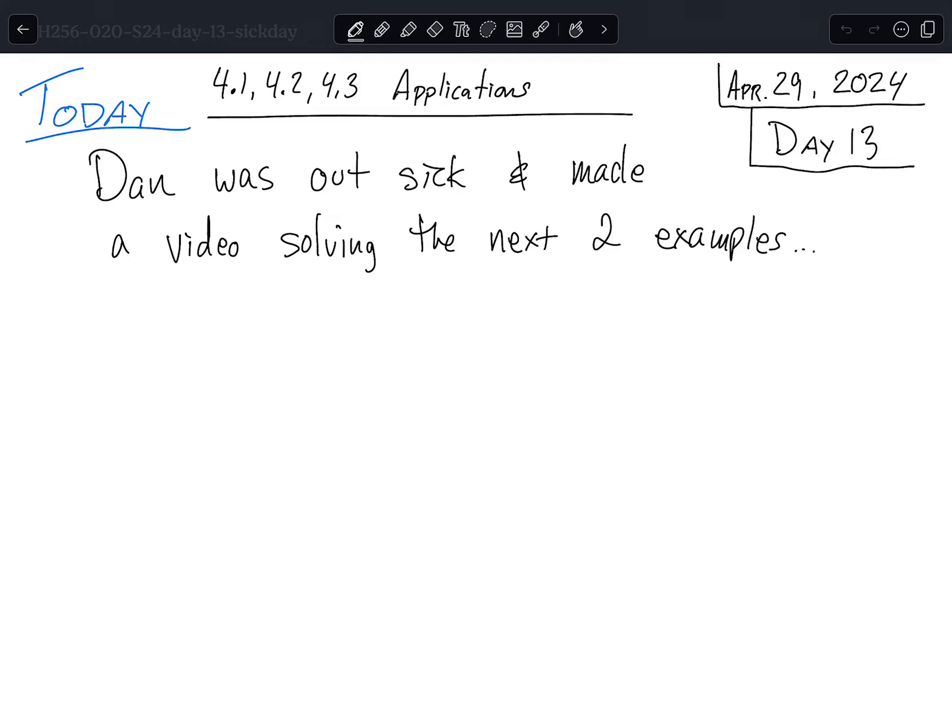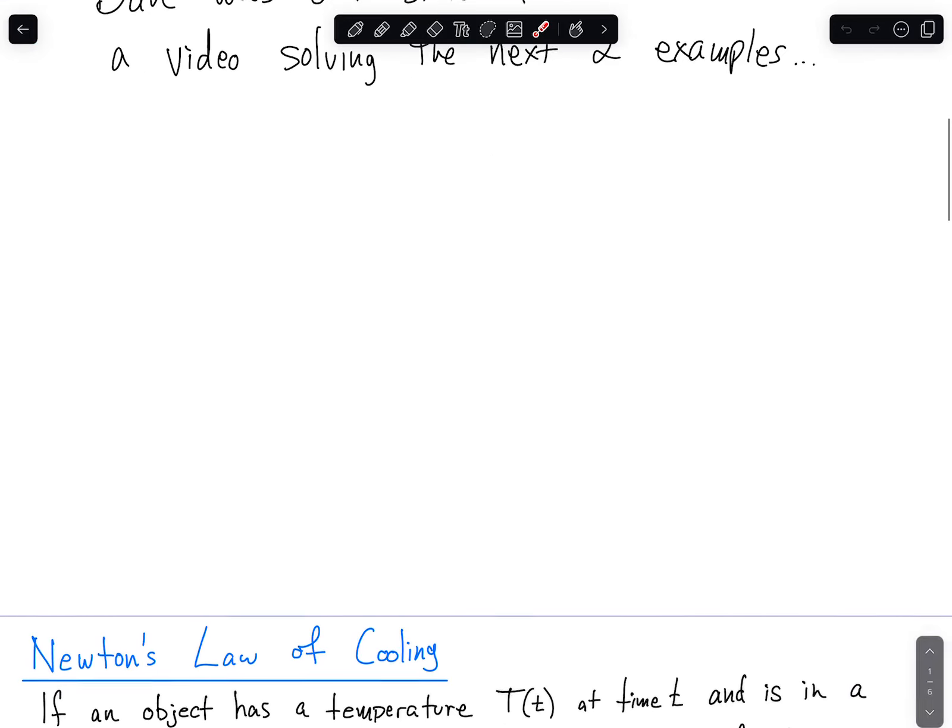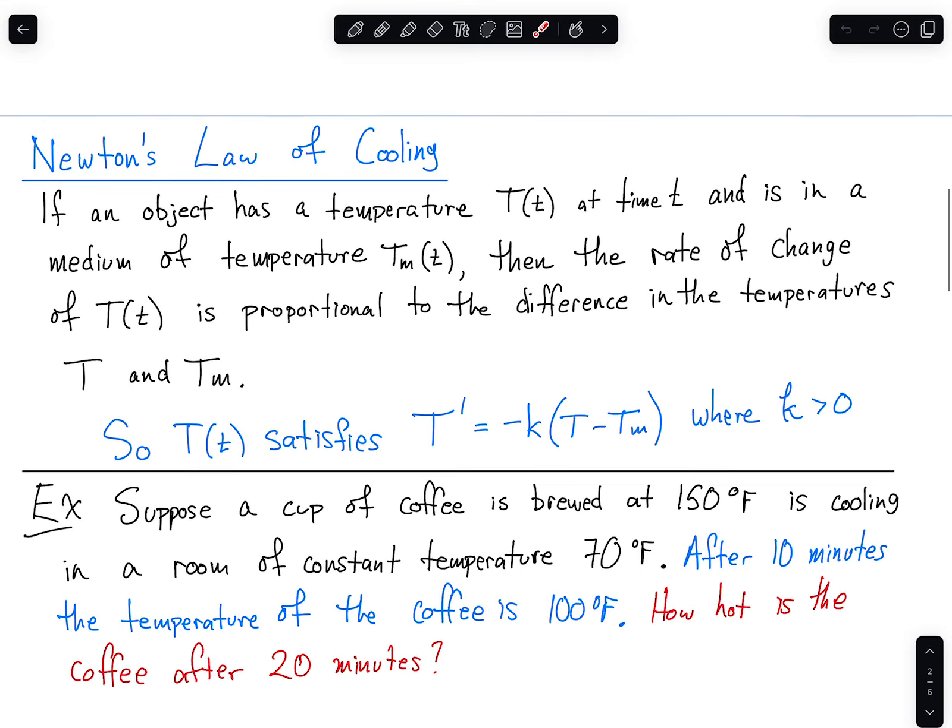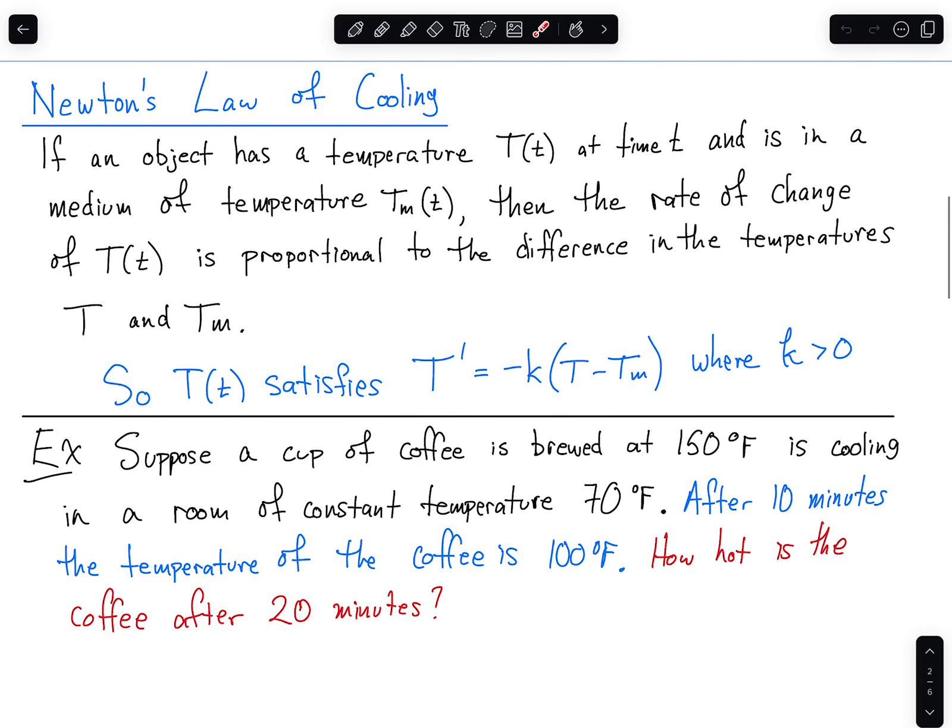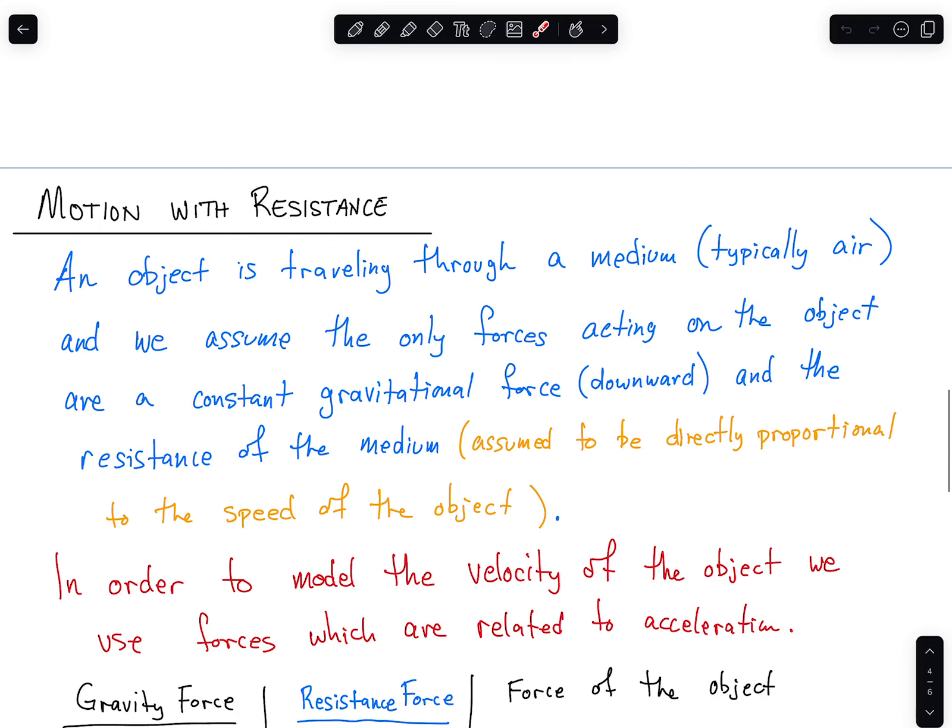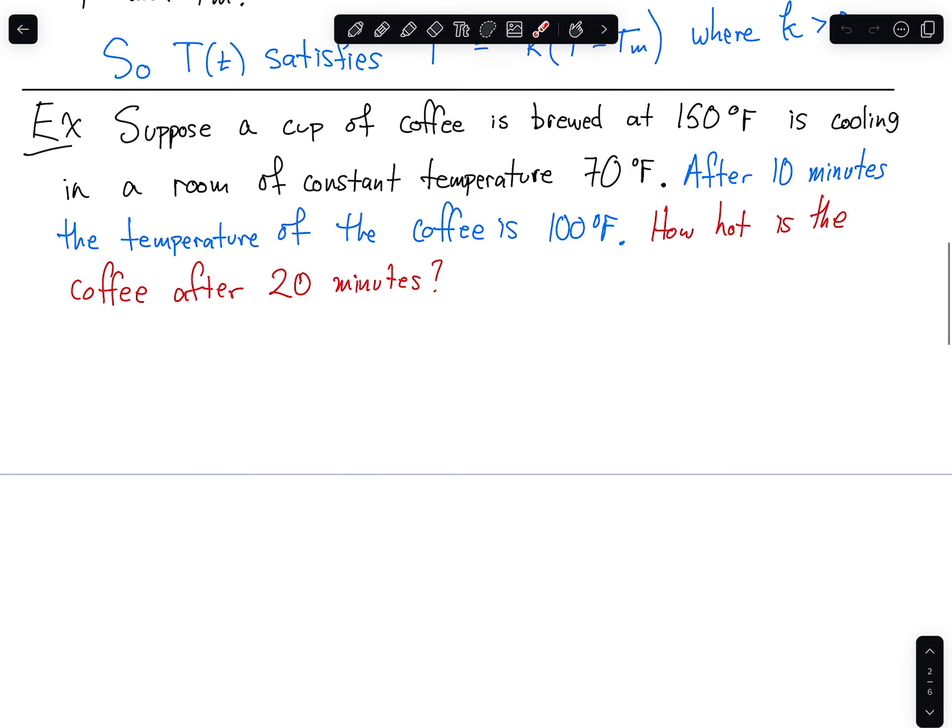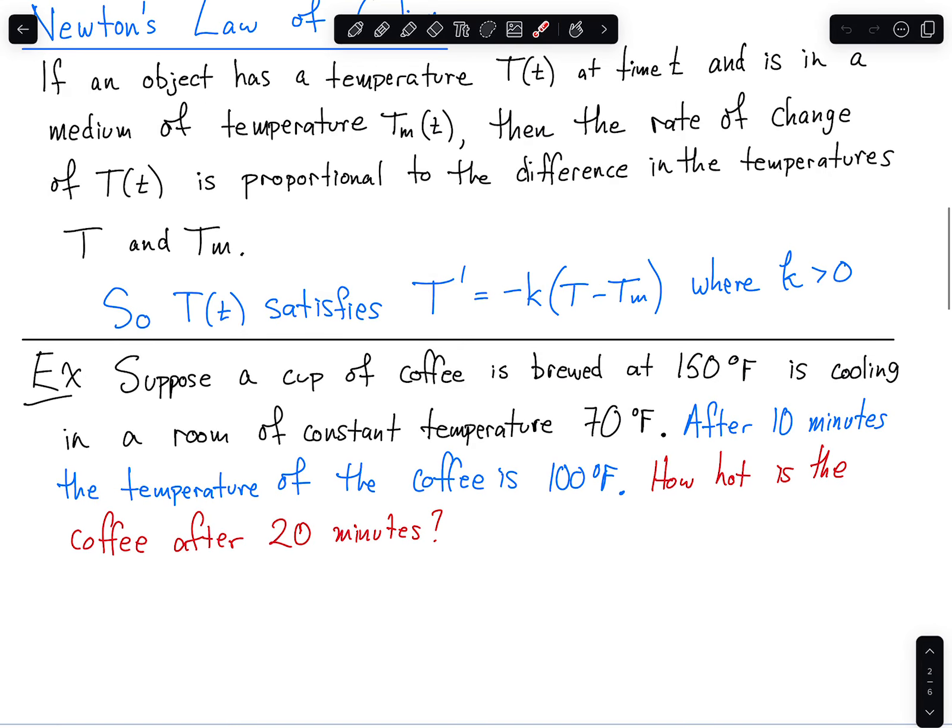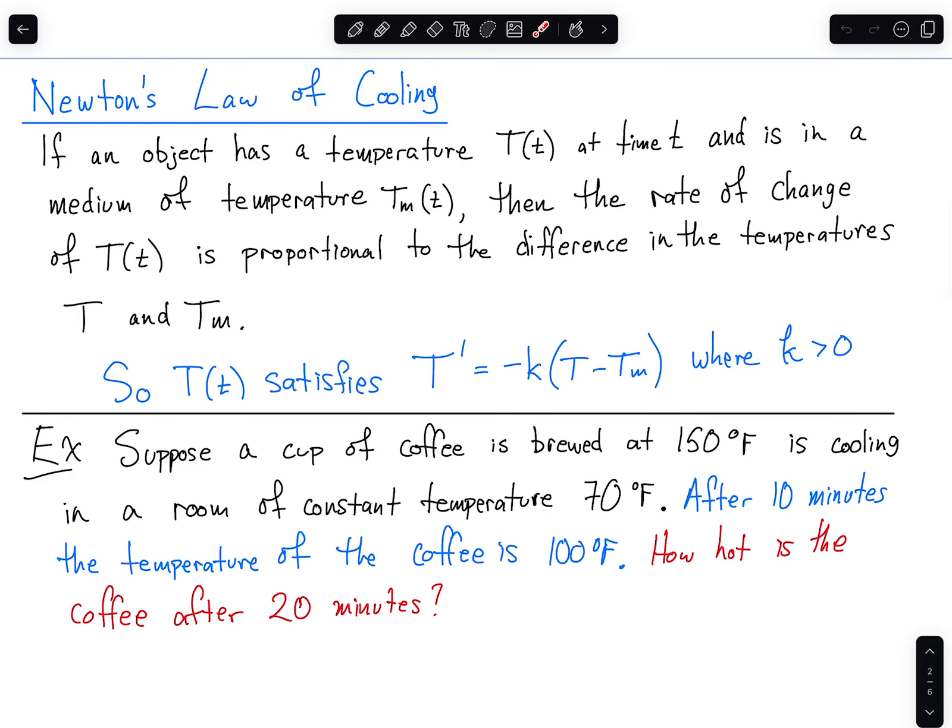All right, so let's work on those other two examples that we didn't get to on Friday. This video is to replace our class on Monday, April 29th, because I was out sick. You might hear it in my voice. So the next couple of examples we did not get to on Friday were Newton's law of cooling involving temperatures and also about motion with wind resistance. So let me work through these and talk about how these things work in this video.